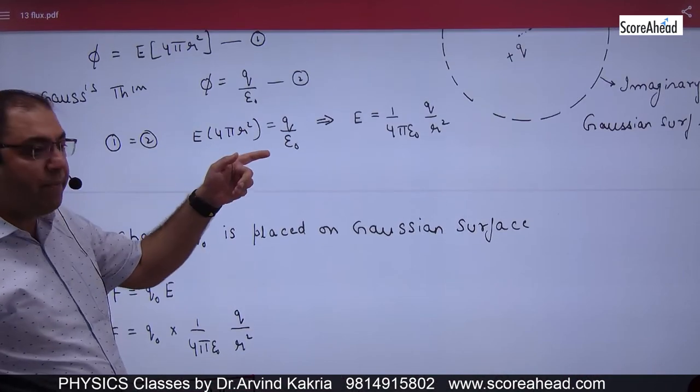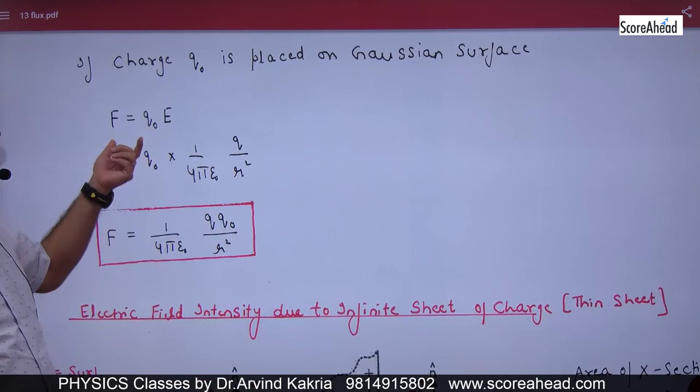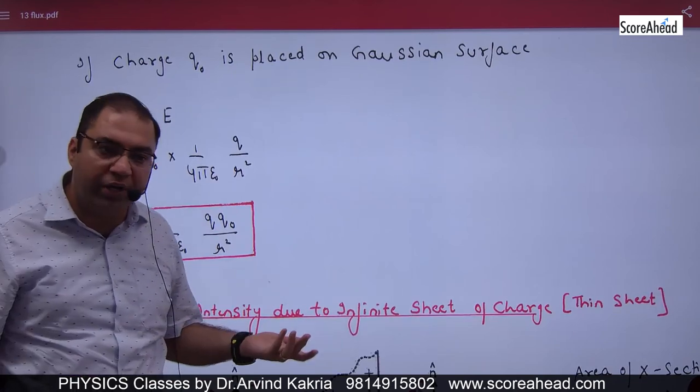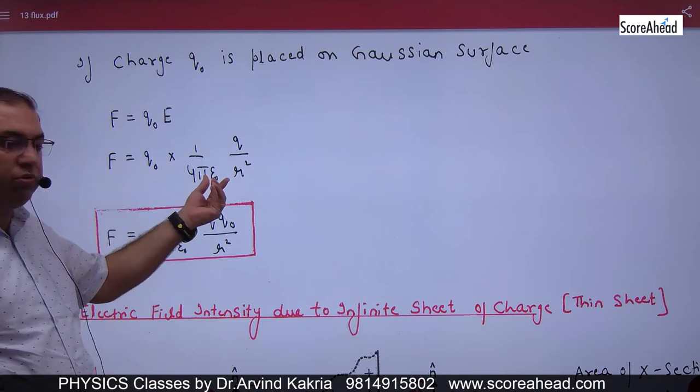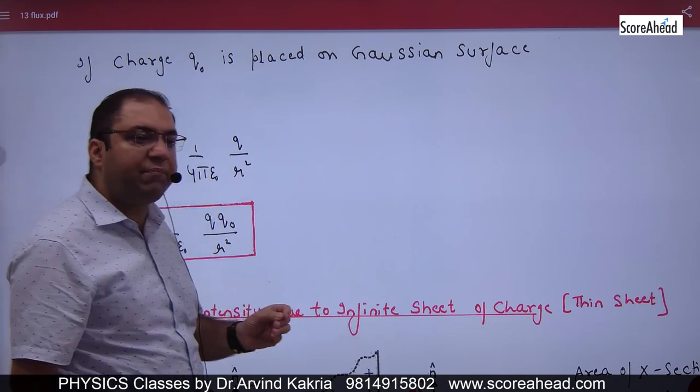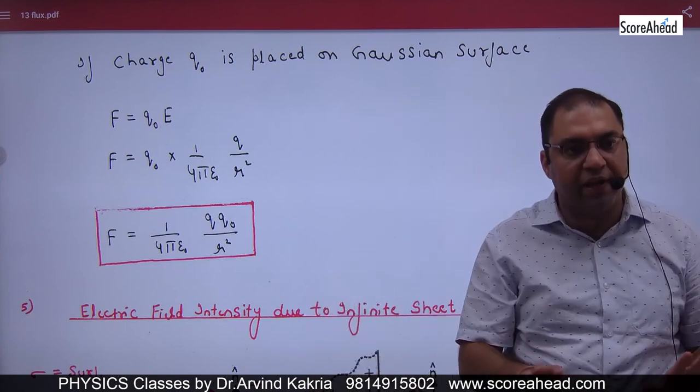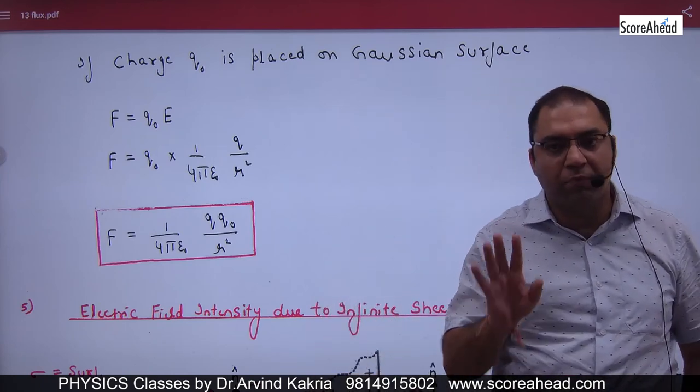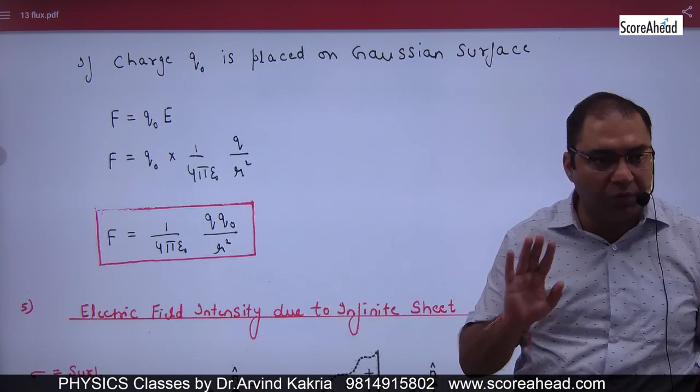Now remember, where you found E, there was q naught. So what force will be experienced by q naught? F is equal to q naught into E. So you put the value of E: q naught into this E. So the answer came 1 by 4π epsilon naught, q into q naught by r square. So this is finally Coulomb's law.